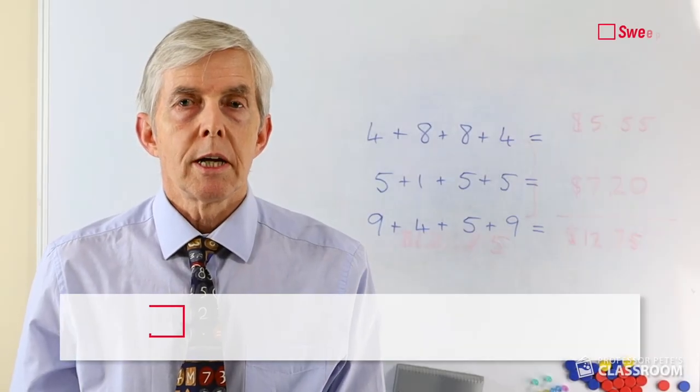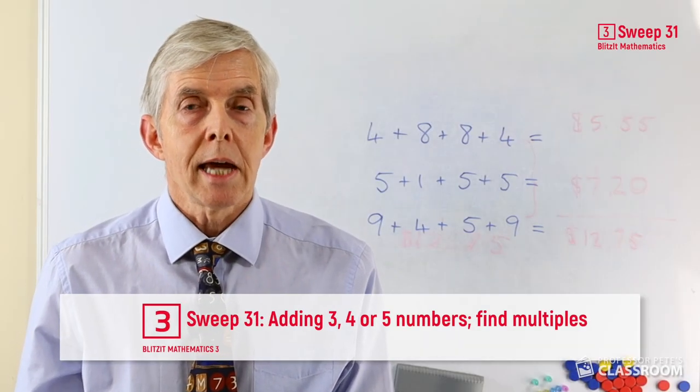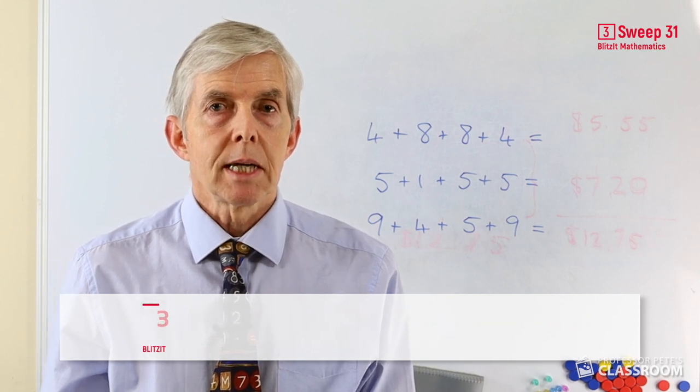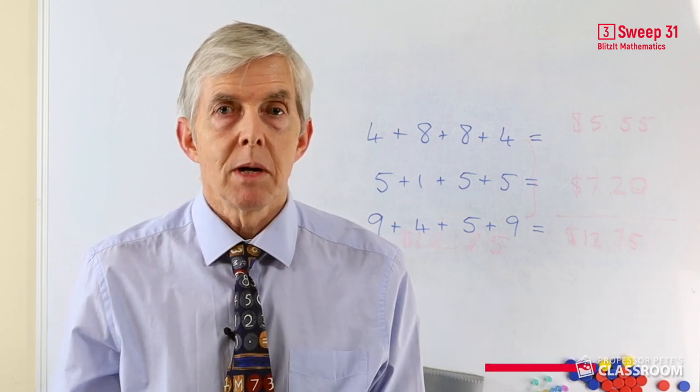Sweep number 31 is a lot like sweep number 30. Again we're adding collections of three or four numbers, but instead of looking to make a 10, we're looking for simple multiples.